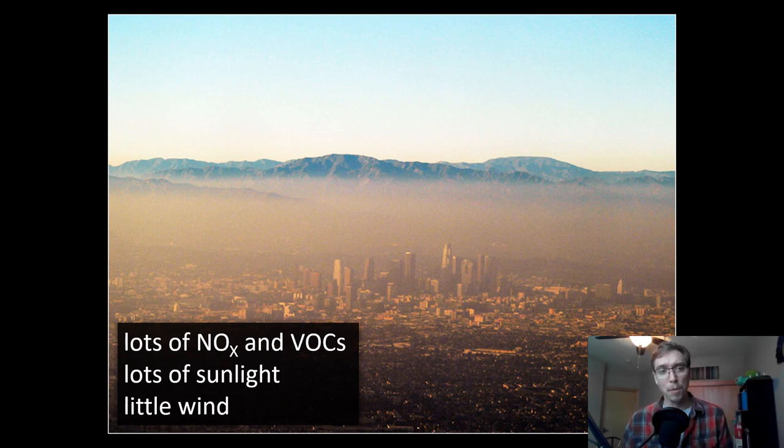But here you can see just a picture of smog. Lots of nitrous oxides and volatile organic compounds. Lots of sunlight, little wind. You get this smog layer that'll form. And it's over major cities. Think of Los Angeles, San Francisco, Beijing. All over, we're seeing this type of formation due to, unfortunately, the massive influx of pollution into our atmosphere.